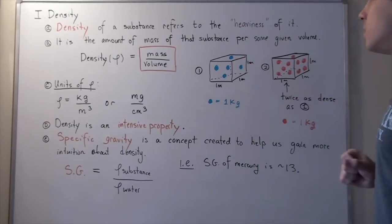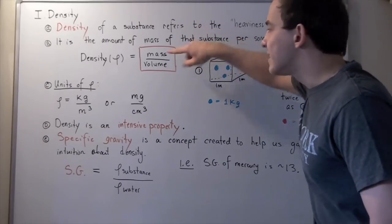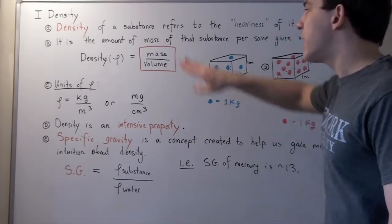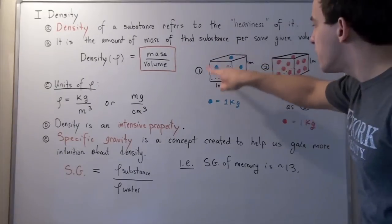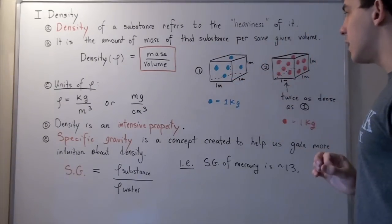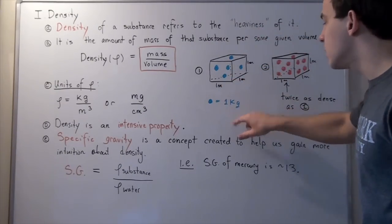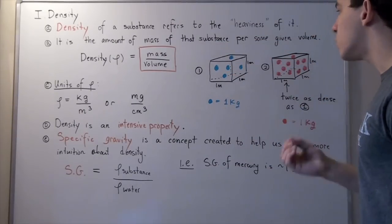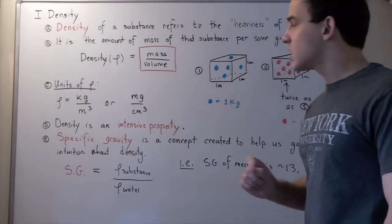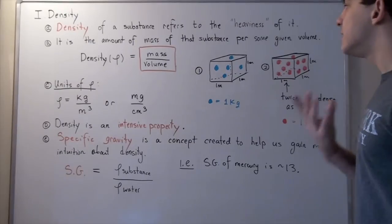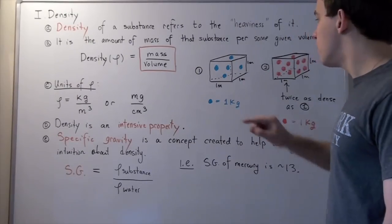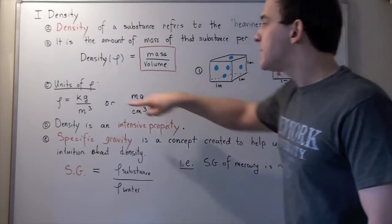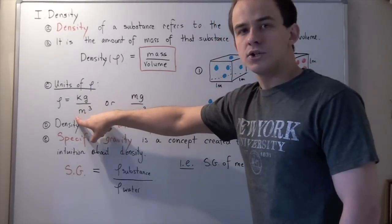What is the density of cube number one? It's the total mass divided by the volume that that mass is in. We have five blue molecules where each molecule has a mass of one kilogram. So five multiplied by one gives us a total mass of five kilograms. Five kilograms divided by a volume of one meter cubed gives us a density of five kilograms per meter cubed.